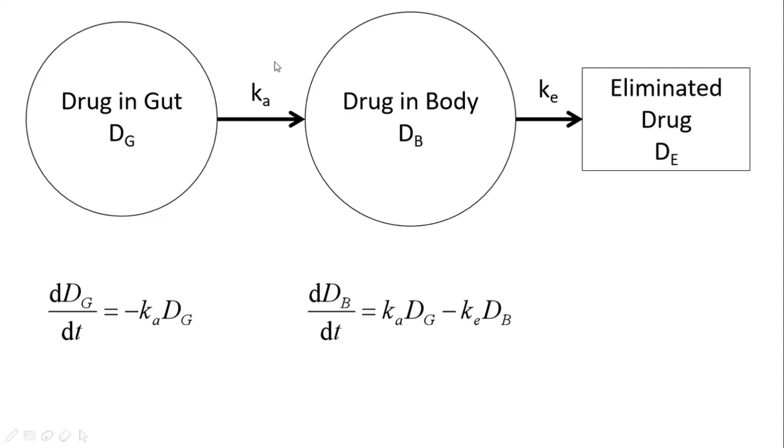Next up, we have the change of DB over time, and that is just KA DG, which is positive because you're putting drug into the body from the gut, and you also have a negative KE DB because you're taking out drug from the body and you're eliminating it through this rate constant KE.